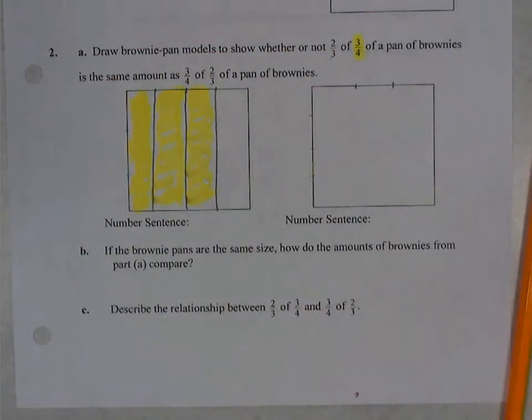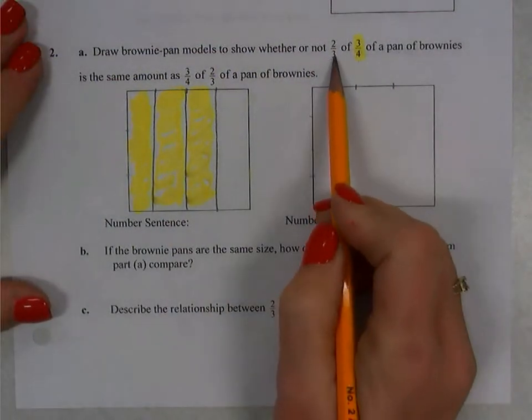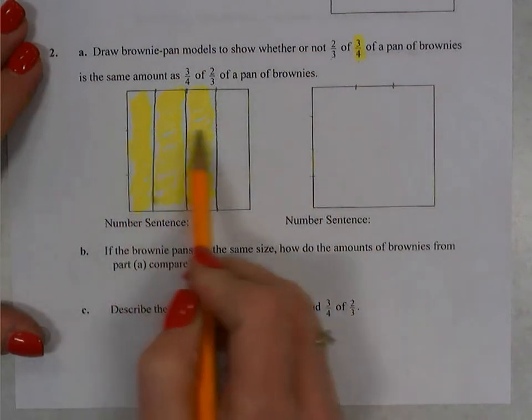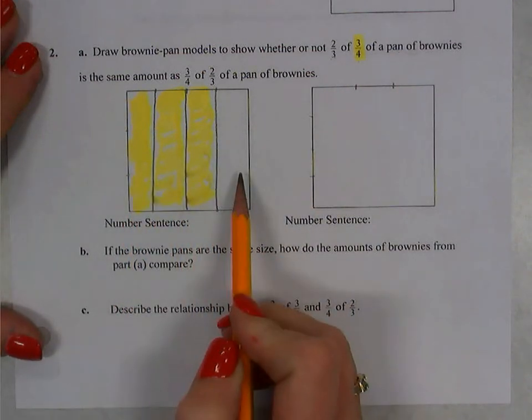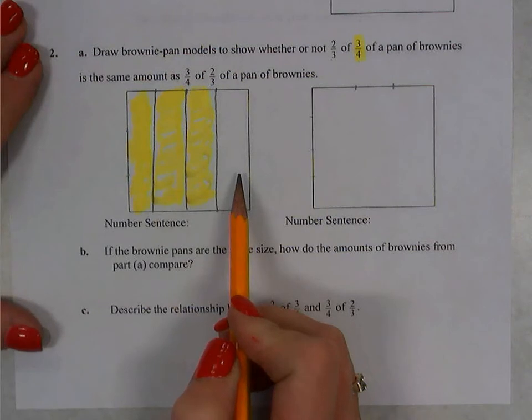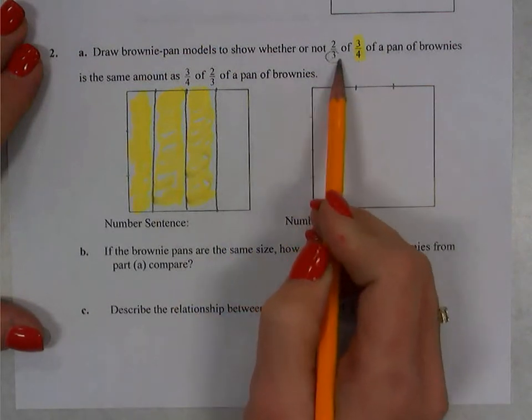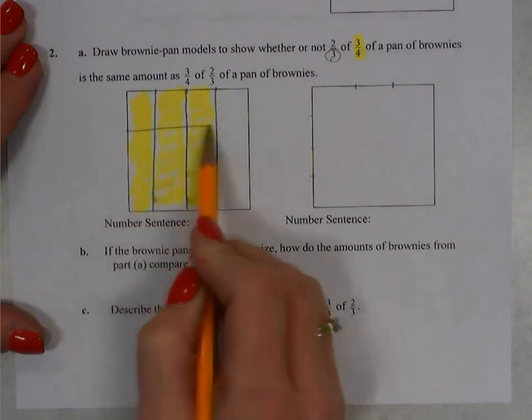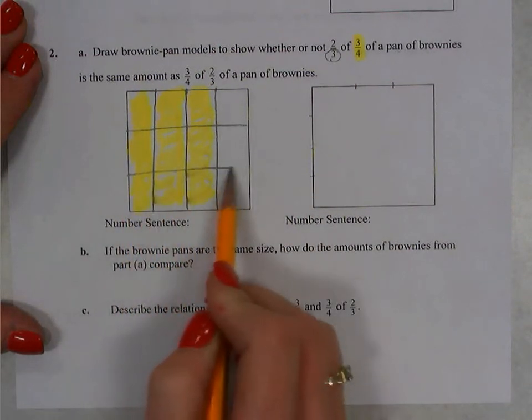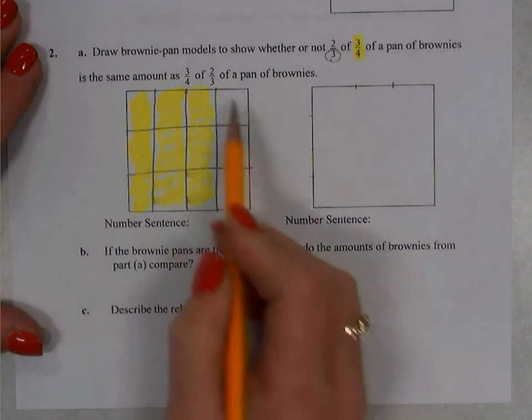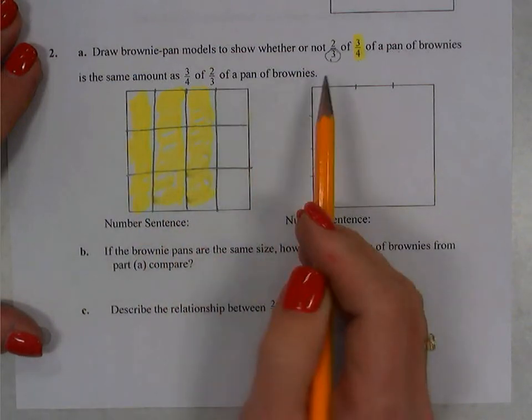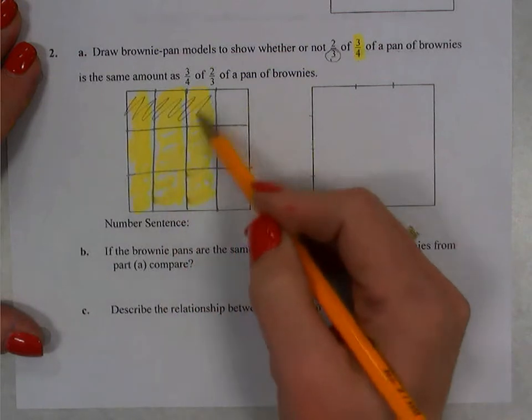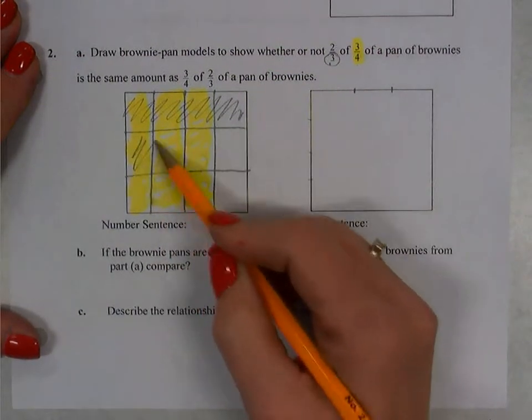Next we're going to look at how do we make sense of what two-thirds of this amount is. So we're going to now subdivide our brownie pan in the opposite direction of what we just did. We're looking to divide it into two of three parts. So the first thing I'm going to do is divide it into three equal parts, my entire pan here, and I want two of those three parts. So there's a third and here is a third.